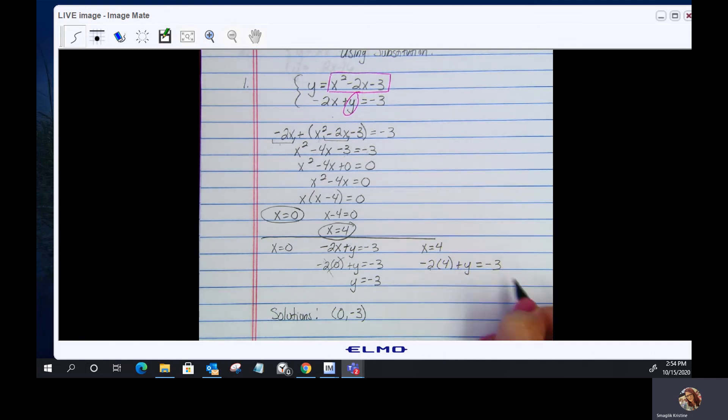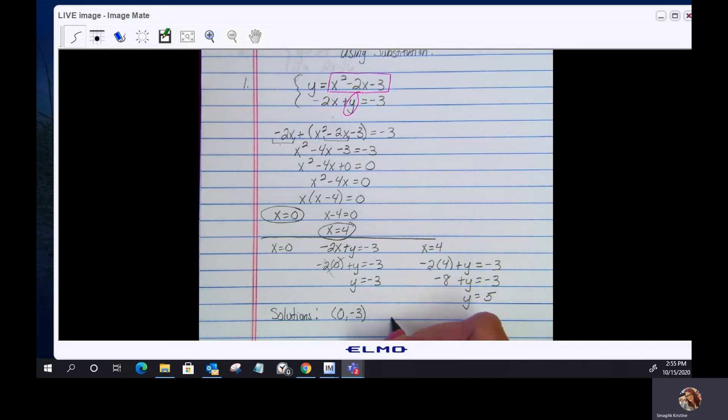Negative 2 times 4, that's negative 8, plus y equals negative 3. If I add 8 to both sides, positive 8 minus 3 is a 5. So my other solution is 4, 5.